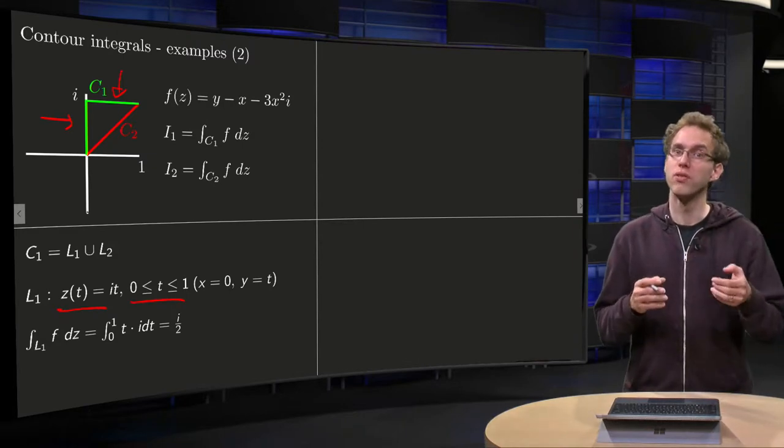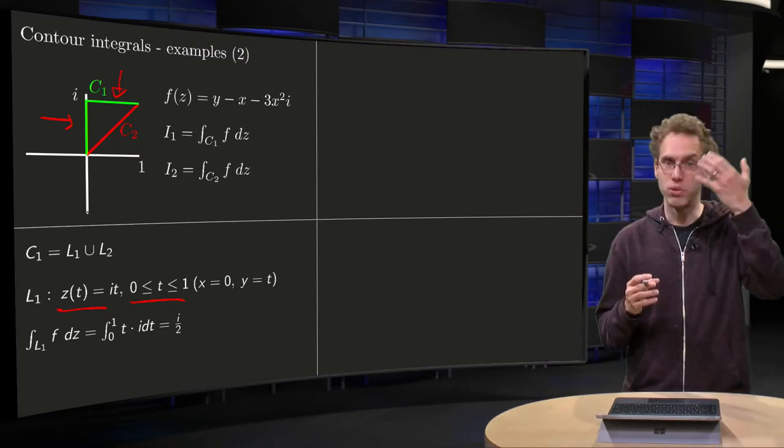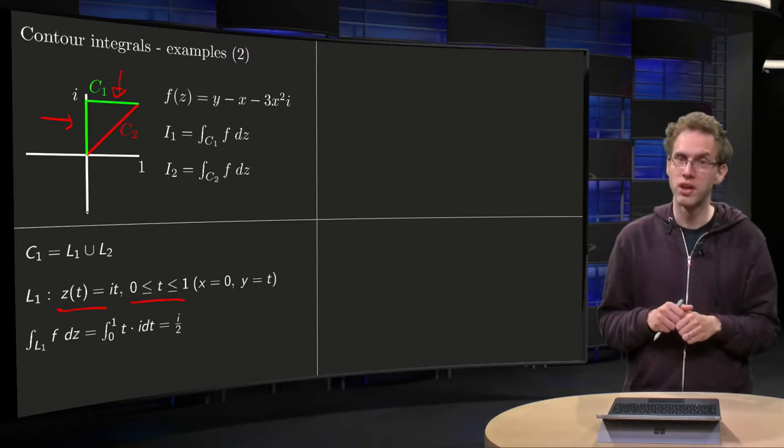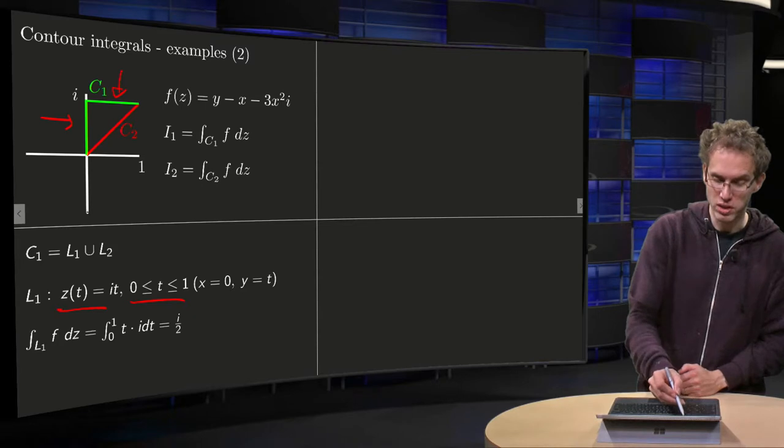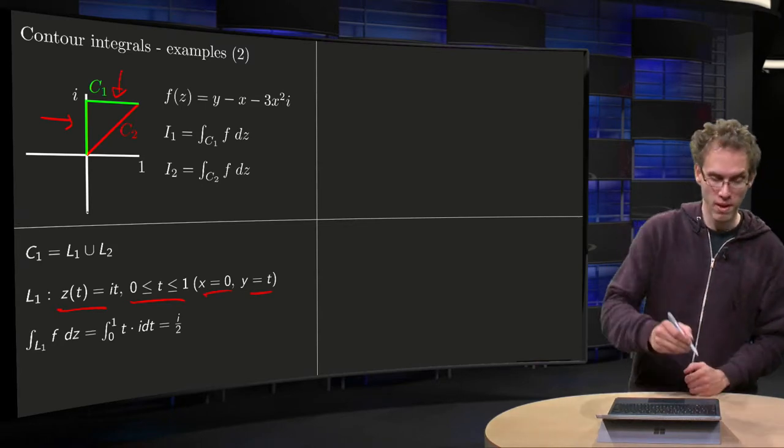Because if you do it like this, you get a line, and at t equals 0 you start at 0, and at t equals 1 you are at i, so you have a line with the correct endpoints. So if you write it down in x and y, you get x equals 0 and y equals t. So how do we compute the integral?